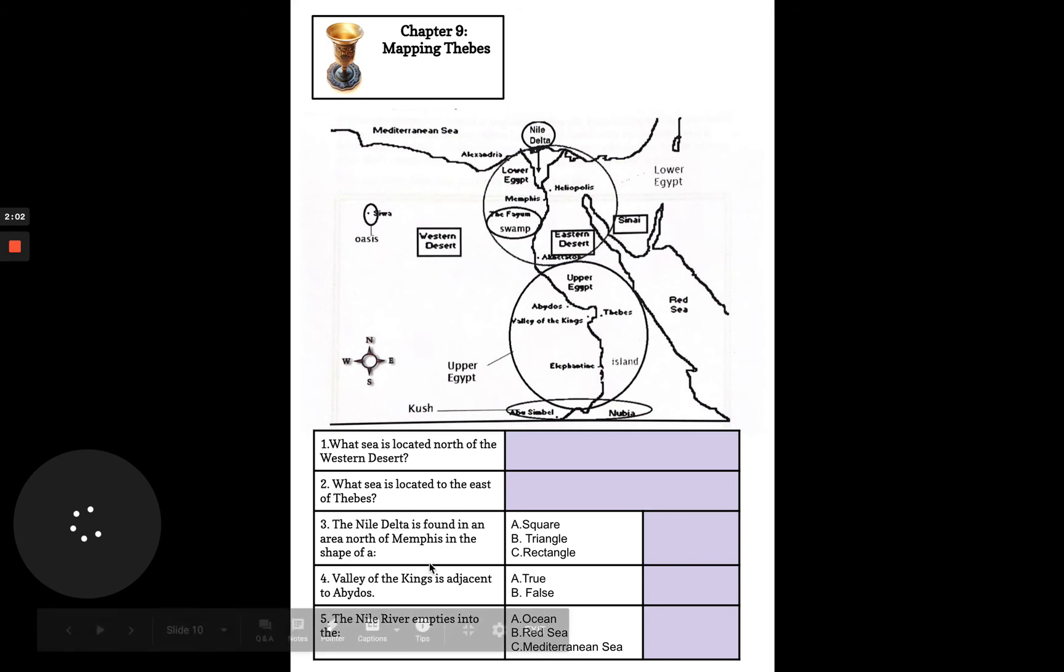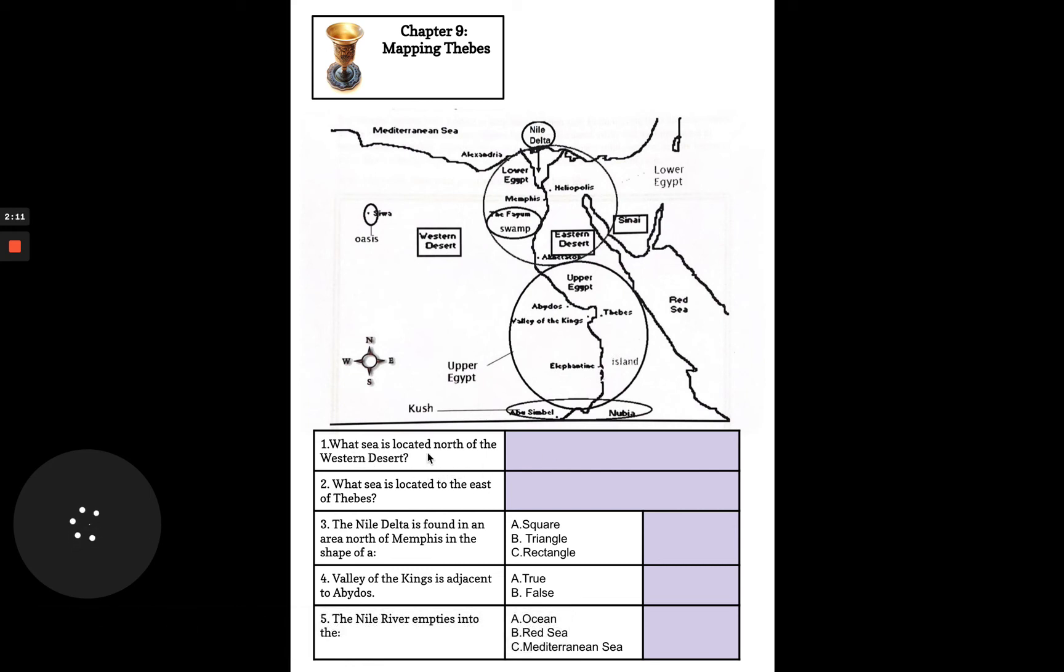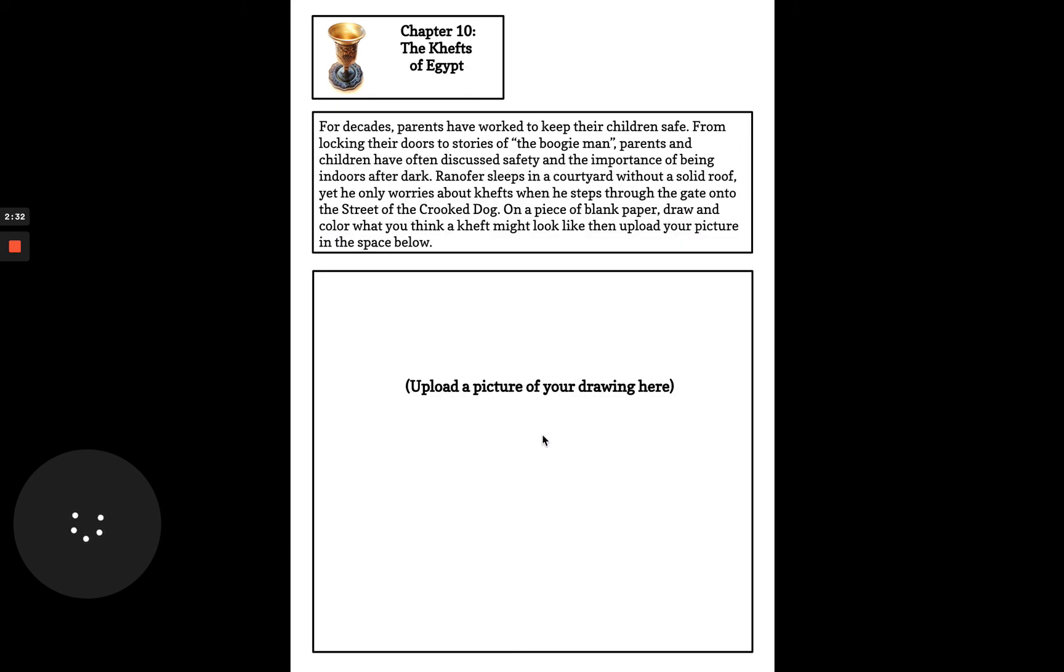Then there are five questions that you are going to answer, and you will type in your answer in this purple box. For example, what sea is located north of the Western Desert? So you will look for the Western Desert, and you see it here. So what sea is located north? North is up. And when you see the sea, you will type in the name of the sea right on this line. You'll click on here and type in.